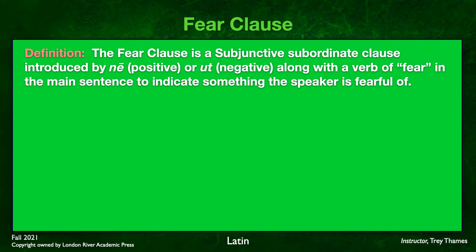The fear clause is a subjunctive subordinate clause. You have to stay with me here because this is the exact opposite of what we normally expect. If it's a positive fear clause, it is introduced with ne. If it's a negative fear clause, it is introduced with ut, along with a verb of fear in the main sentence. In purpose clauses, ut was positive and ne was negative — here it is essentially the opposite.